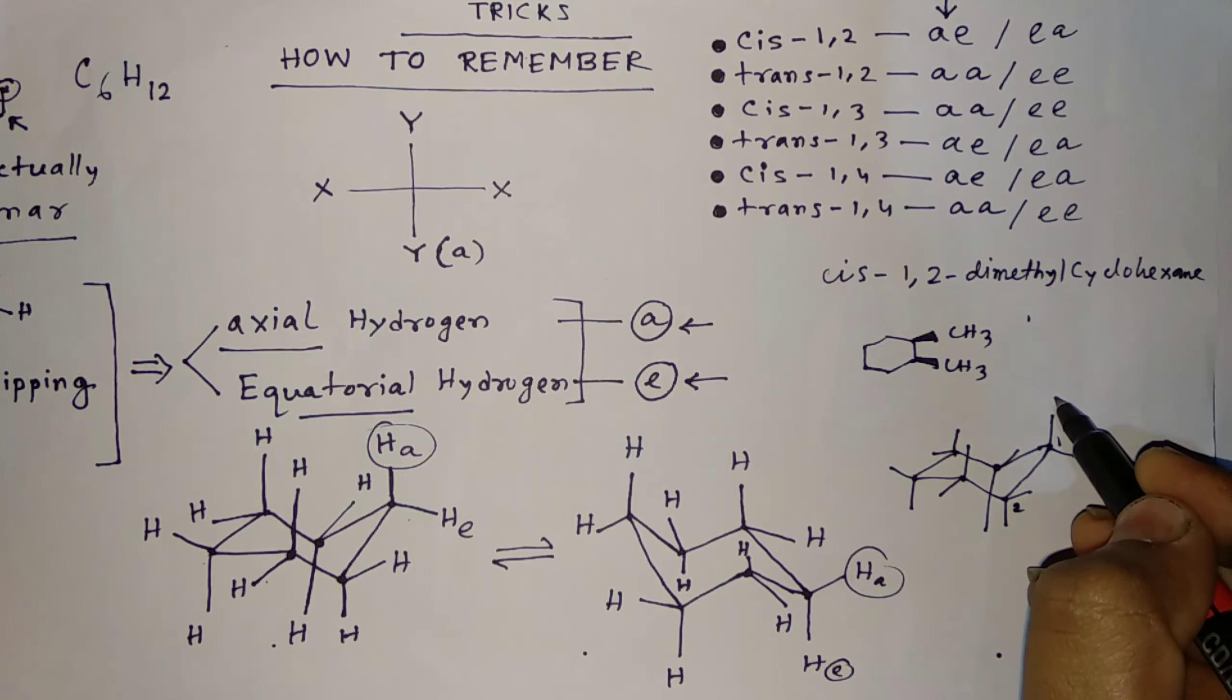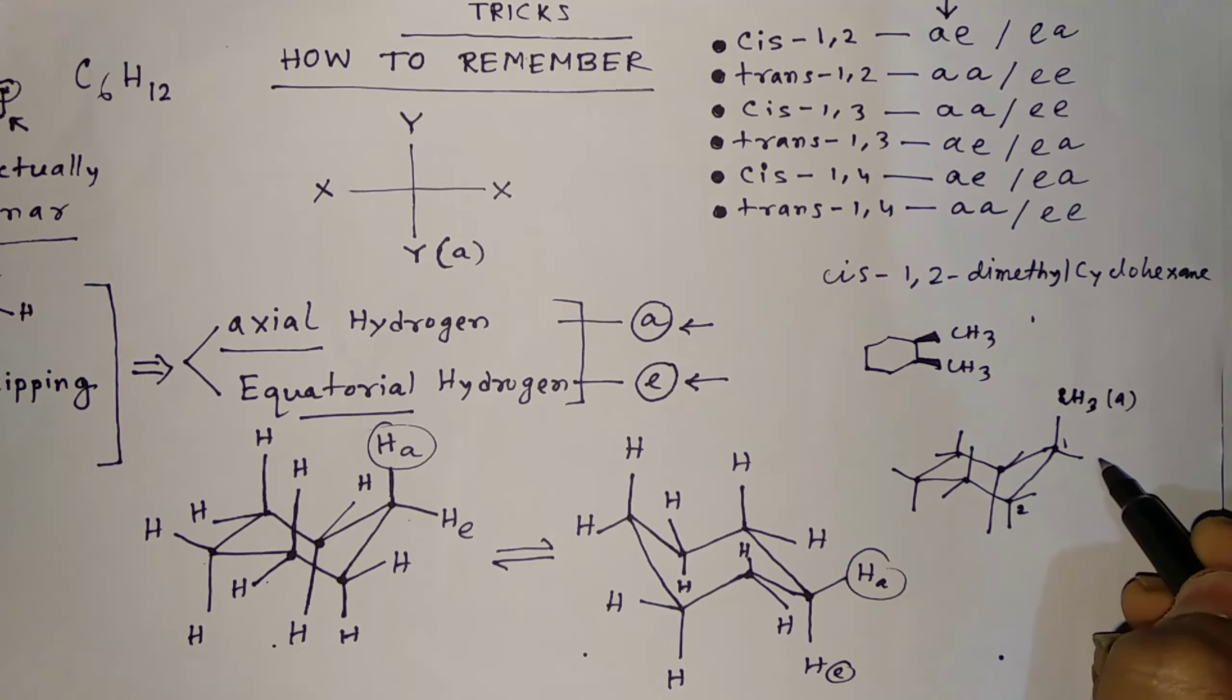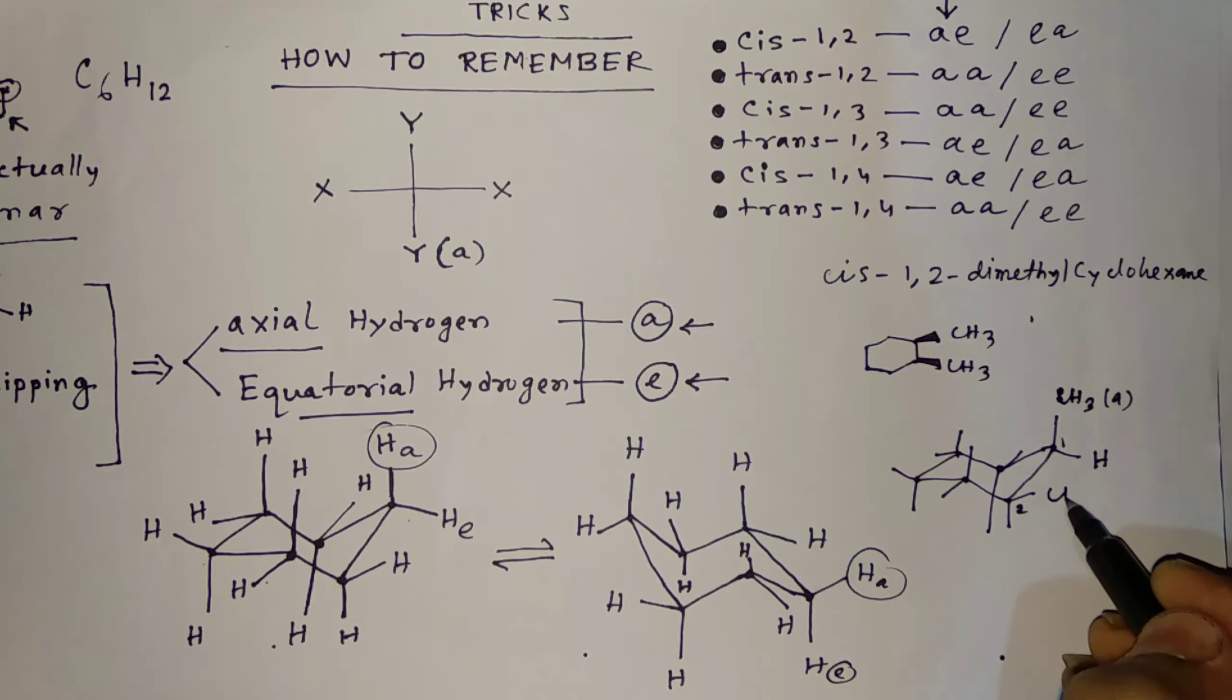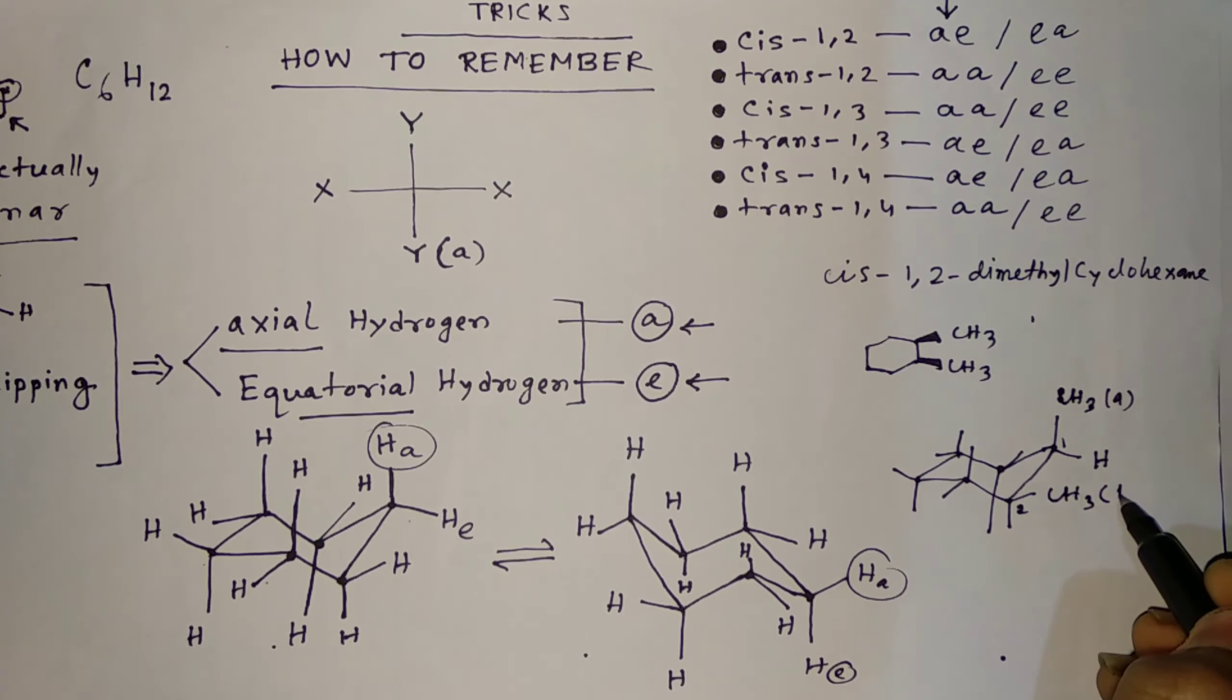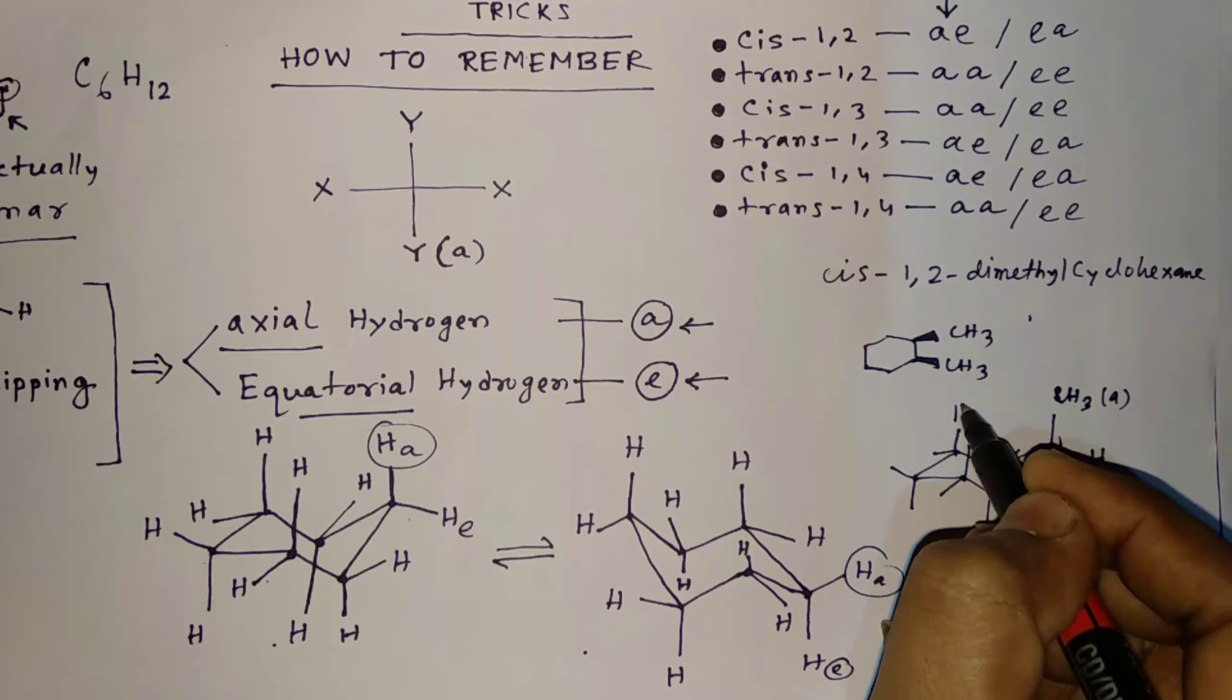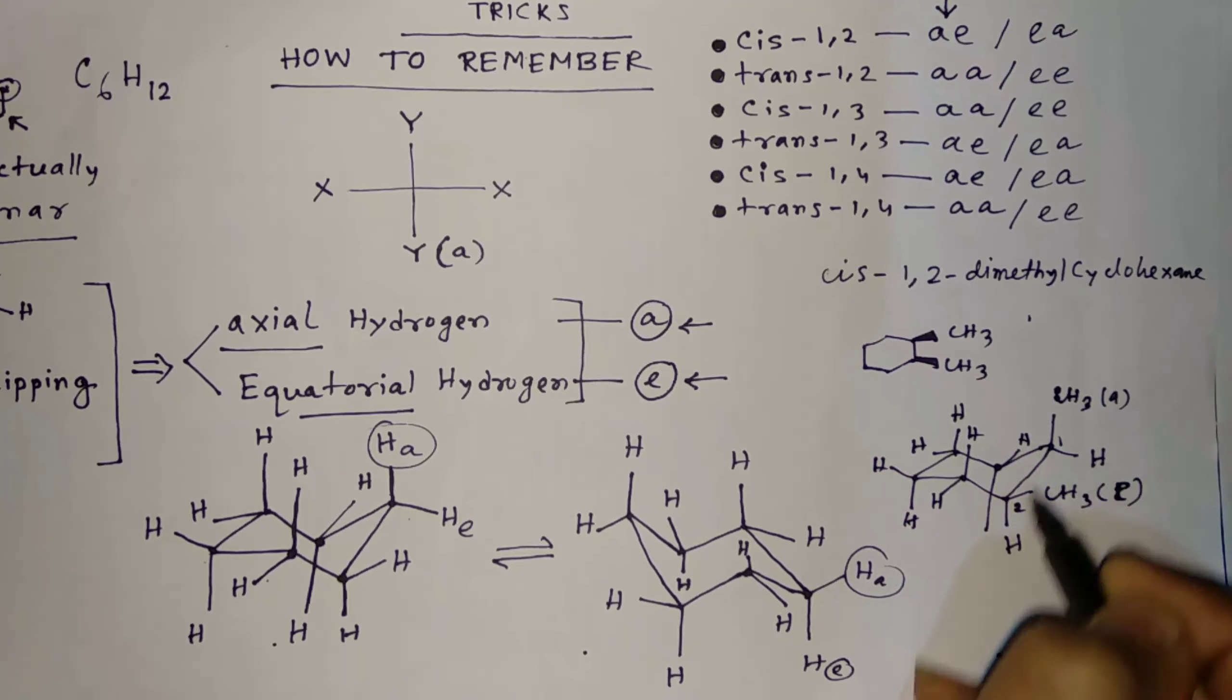So if this is A, axial, so methyl, 1-methyl is axial and here also, nothing, so hydrogen. And another methyl will be equatorial. So it's here, this is equatorial. And this is axial. Every other bond, there will be hydrogen. So this is the right way to remember.